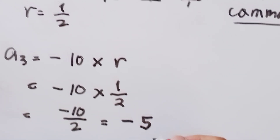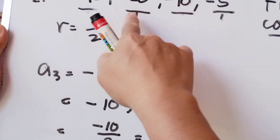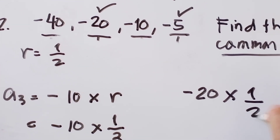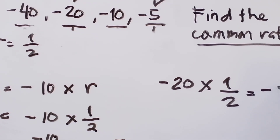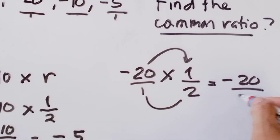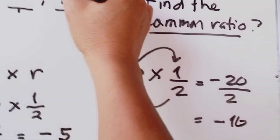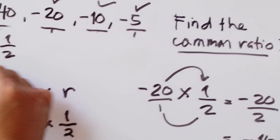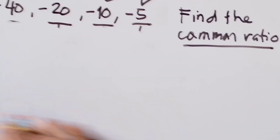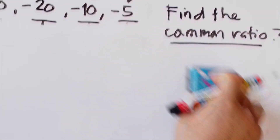Let us check if they are equal. 6 divided by 2 is equal to 3. 18 divided by 6 is 3. And 54 divided by 18: let us check — 18 times 3 is 54, so this is also 3. Therefore the common ratio is equal to 3.